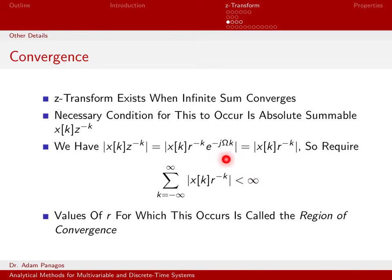And then e to the j anything, that's always something on the unit circle. So the magnitude of something on the unit circle is 1. So this simplifies to this.